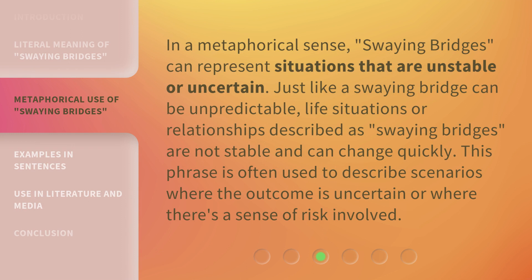In a metaphorical sense, swaying bridges can represent situations that are unstable or uncertain. Just like a swaying bridge can be unpredictable, life situations or relationships described as swaying bridges are not stable and can change quickly. This phrase is often used to describe scenarios where the outcome is uncertain or where there's a sense of risk involved.